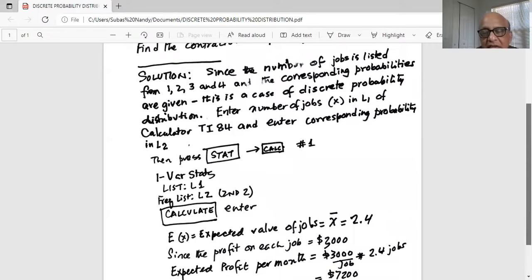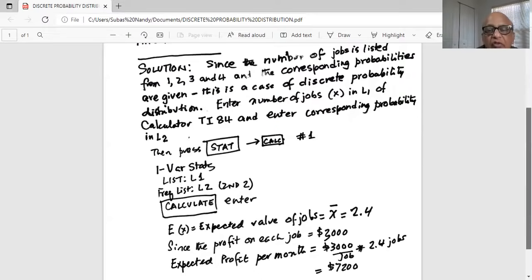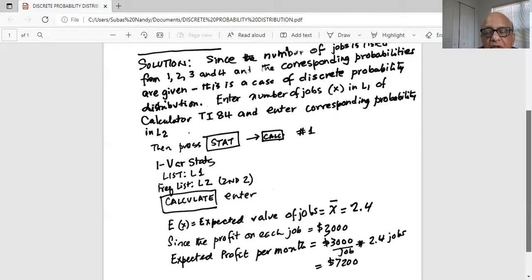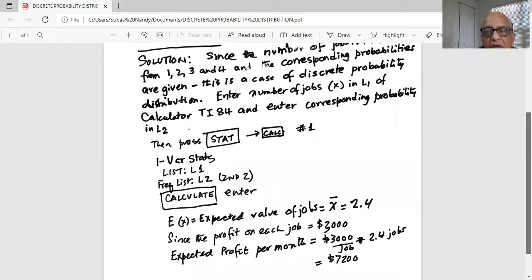E[x] is the expected value of jobs is same as the mean, which is the first line in the next screen is x bar, which is 2.4. On the average, the contractor gets 2.4 jobs per month. Since profit on each job is $3,000, expected profit per month is $3,000 per job multiplied by 2.4 jobs, which is expected profit per month of $7,200.